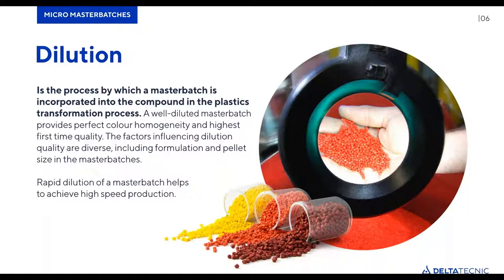Other factors also influence the incorporation of coloring into the base compound during extrusion, such as the type of equipment being used — dosage machines, which extruders, what extruder head, and so on. Another important factor is the production parameters: temperature, speed, pressure, and other variables. So dilution is a complicated science with many factors, but from the master batch viewpoint it comes down to pellet size and formulation.